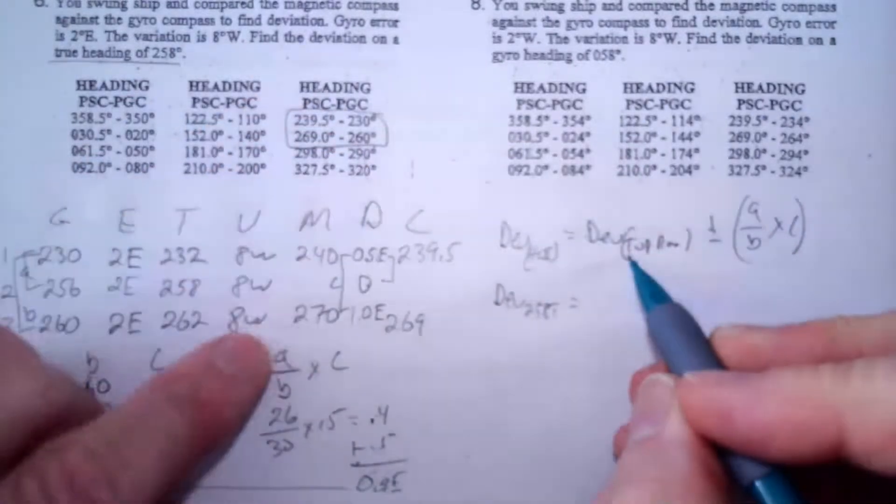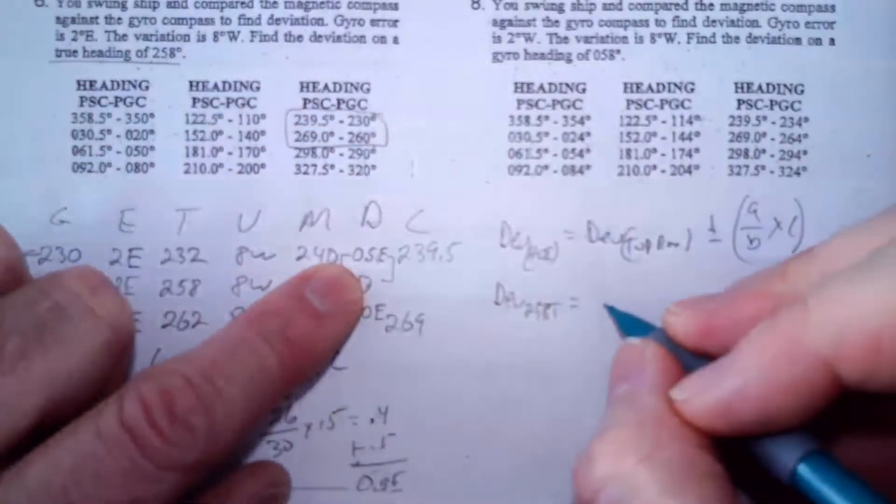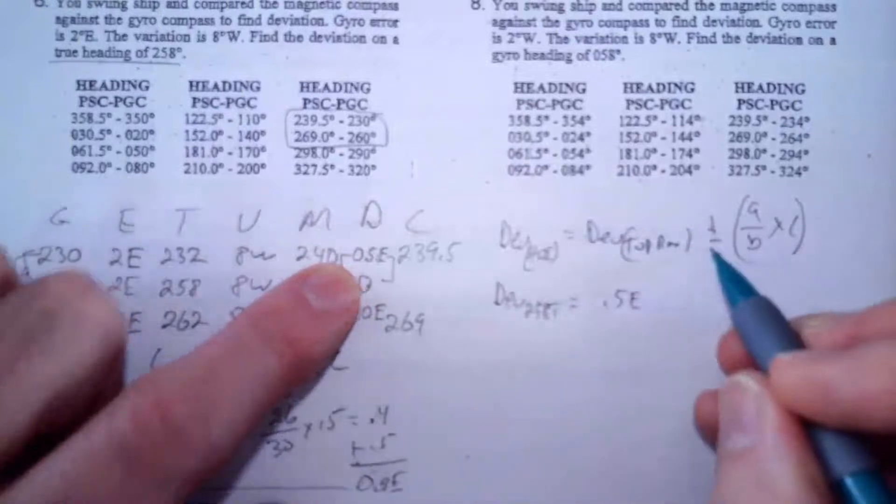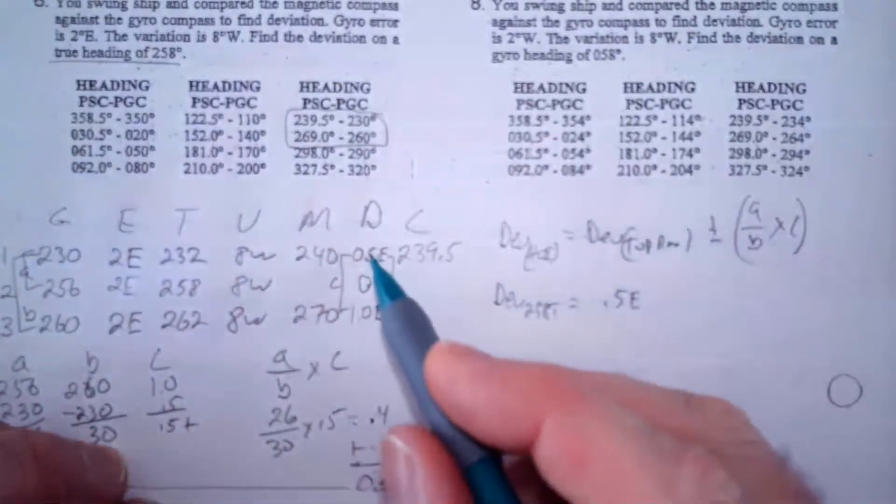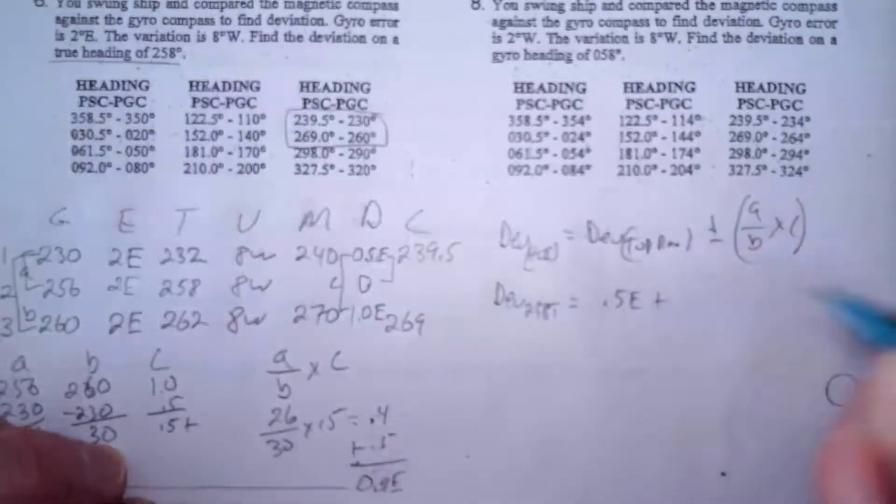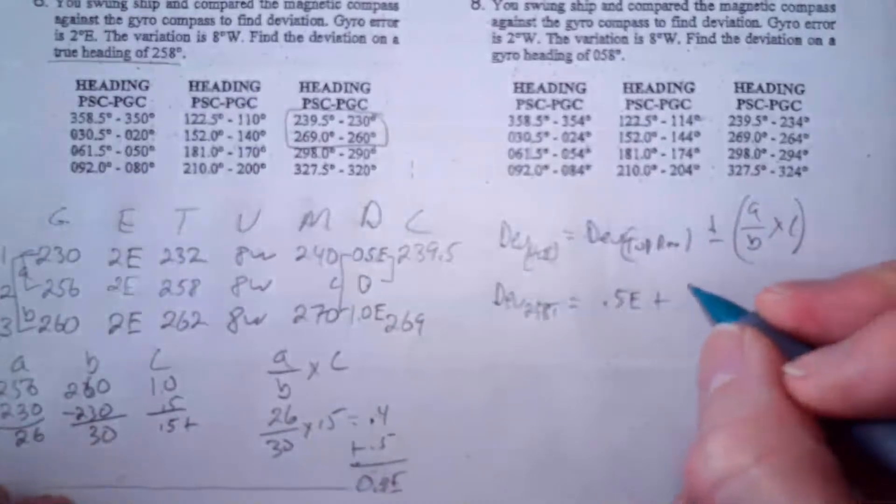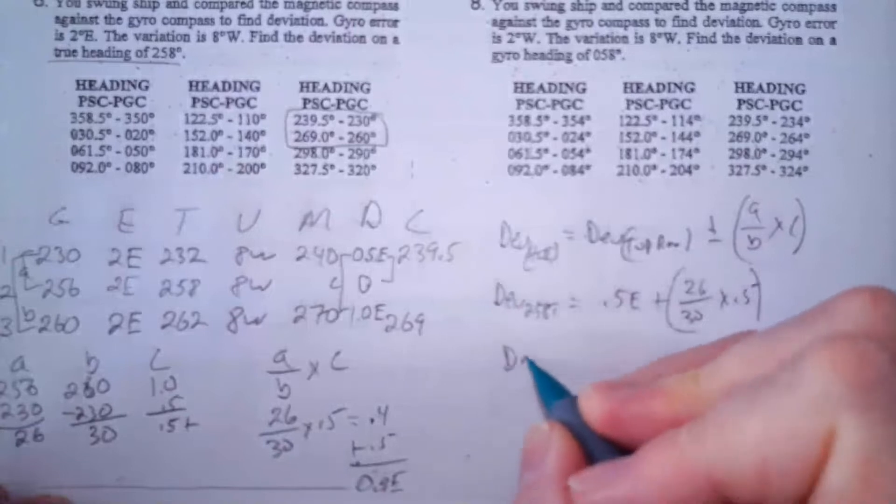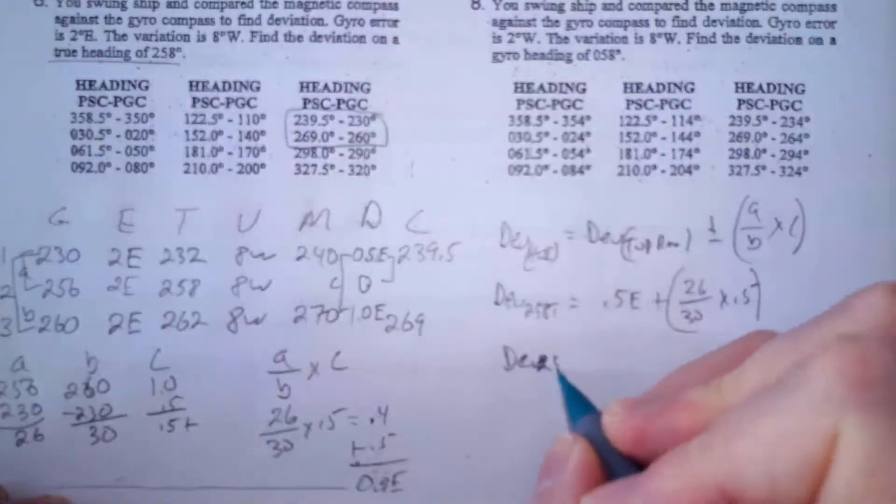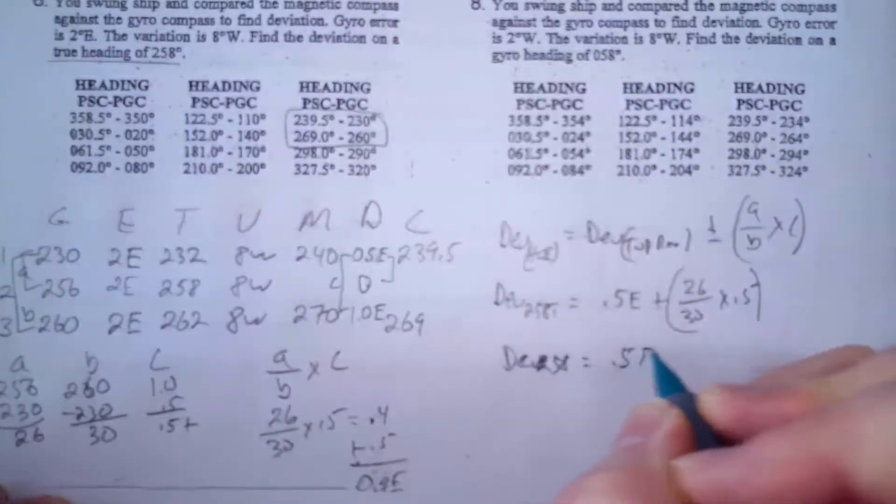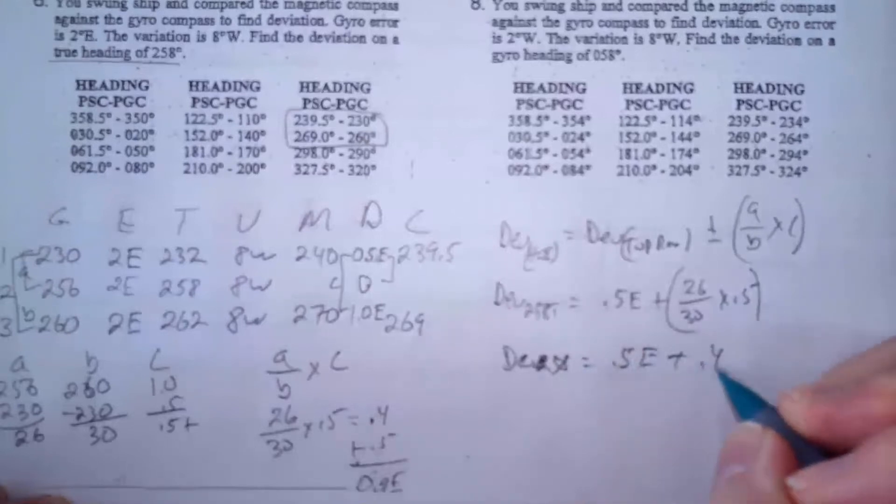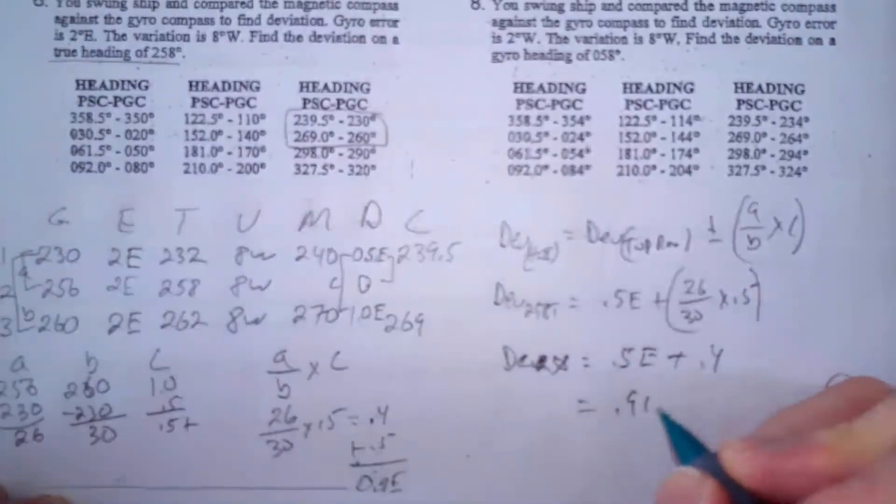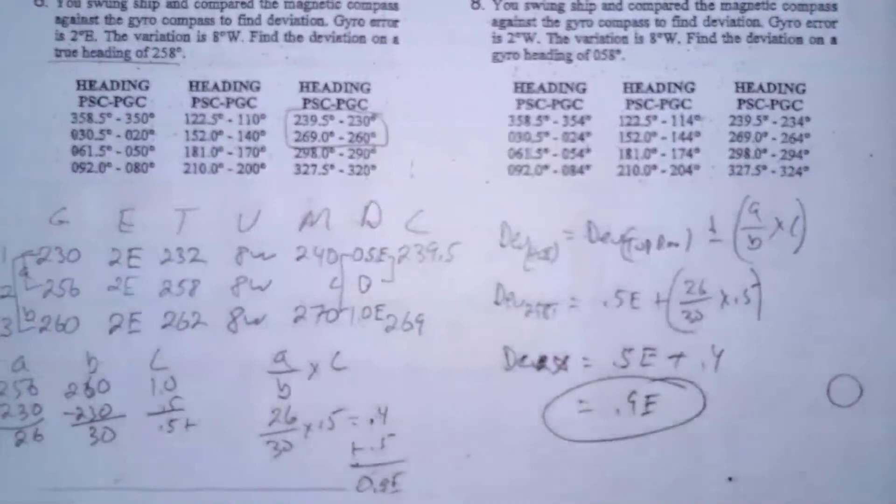Equals deviation from the top row, so that would be 0.5 east. Now I got to decide if I'm going to add or subtract. See, the trend here is my number has to be between these two, so it's going to be added to 0.5. So I'm going to go plus. Now I do my A over B, 26 over 30 times 0.5. So I get deviation for 258 equals 0.5 east plus 0.4, and that equals 0.9 east, and that's the answer.